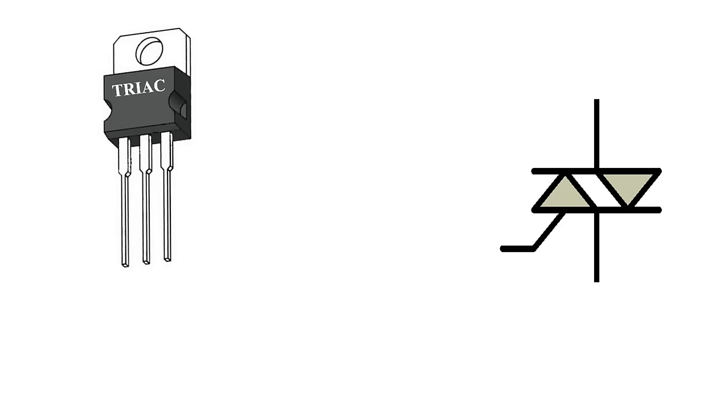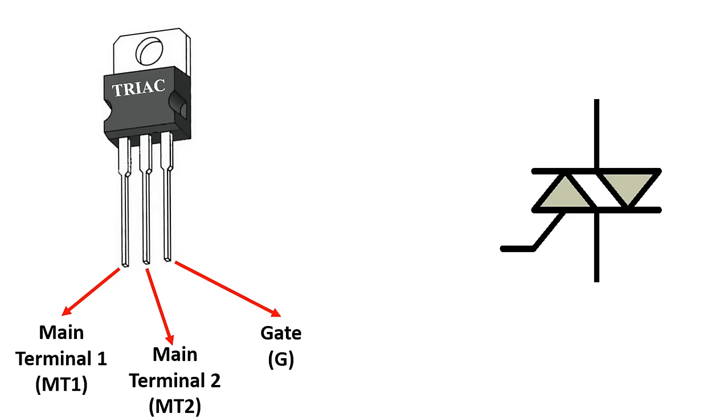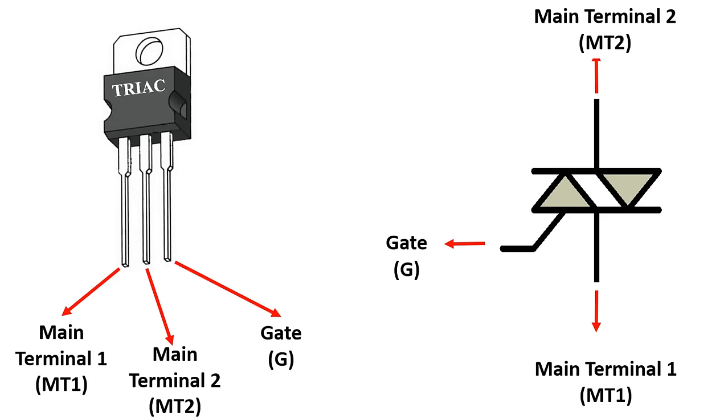You see the shape of a TRIAC on the left and its symbol on the right. TRIACs also have three pins. One of them is main terminal 1, the other is main terminal 2, and the last is gate. The abbreviations MT1, MT2, and G are used for these. In the symbol, the pin naming is like this.